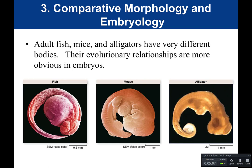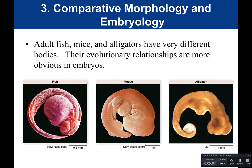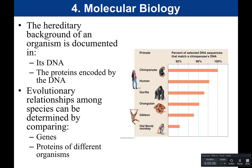In early human embryo development, we actually still have a tail — which ends up being your sacral bone or tailbone. Notice that in early development, organisms tend to look very similar, indicating an evolutionary relationship because they look similar at certain points in their life cycle.